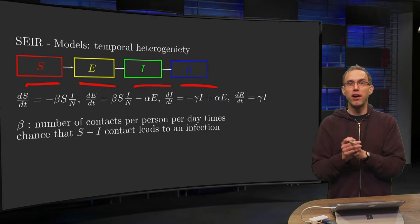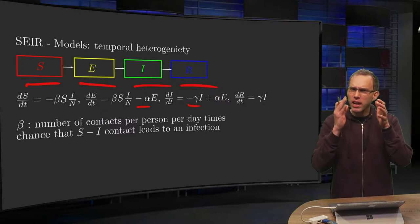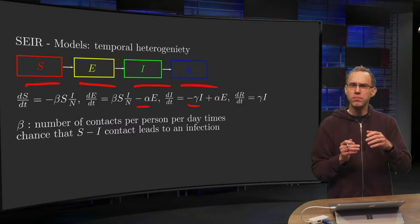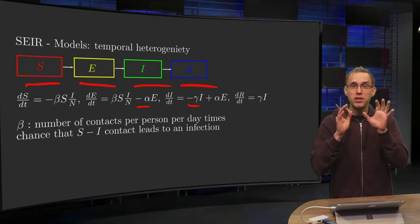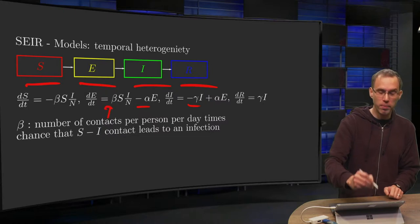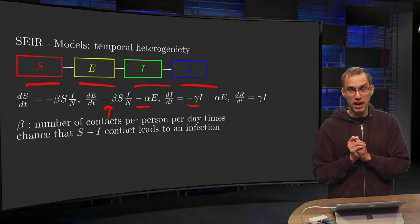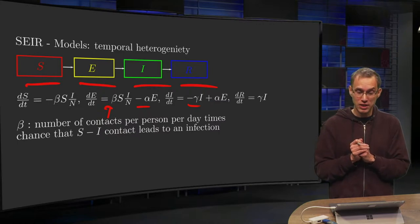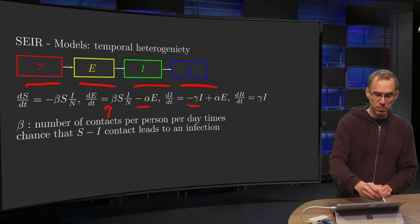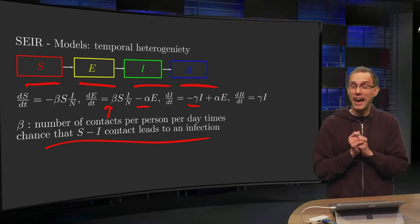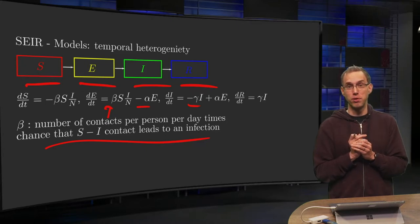The final part of the chain is relatively easy because the coefficients alpha and gamma can be estimated pretty well. They have to do with the incubation time and average illness time. Beta is more problematic—it states the number of contacts per person per day times the chance that such a contact leads to an infection. In this video we will focus on influencing the number of contacts per person per day.